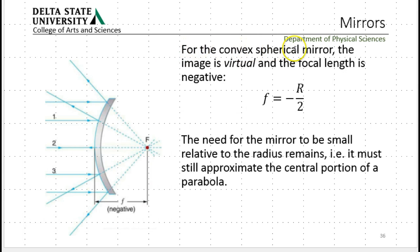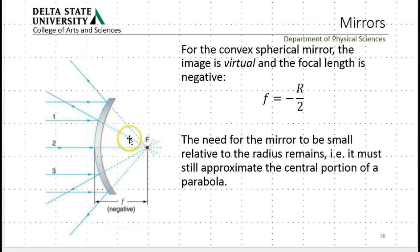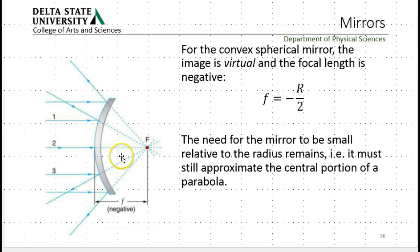Moving on, for the convex spherical mirror. Convex spherical mirror is divergent. A concave spherical mirror is convergent. So the convex one is divergent. So divergent mirror, divergent lenses have simple similar properties. For the divergent lens, the focal length is minus R over 2, just the opposite of the converging mirror. The divergent mirror focal length is minus R over 2.